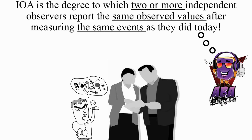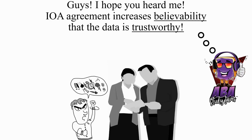IOA is the degree to which two or more independent observers report the same observed values after measuring the same events. IOA agreement increases believability that the data is trustworthy.